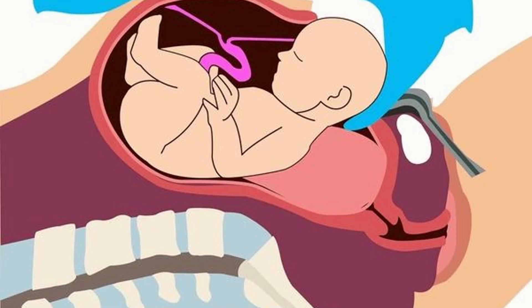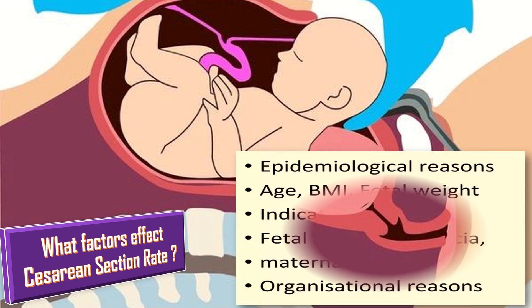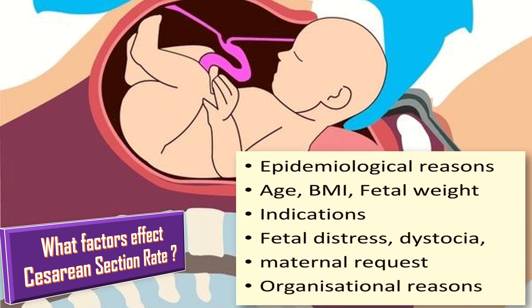What factors affect the cesarean section rate? These include epidemiological factors such as age, BMI, and fetal weight. The different indications of cesarean sections include fetal distress, dystocia, maternal requests, and organizational reasons.